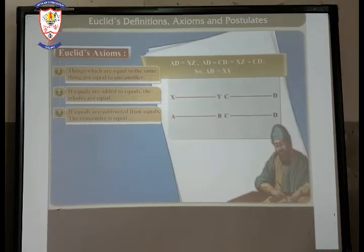Third one: If equals are subtracted from equals, the remainder is equal. For example, AD is equal to XZ. When we are subtracting CD from both the lines, it becomes AB is equal to XY.